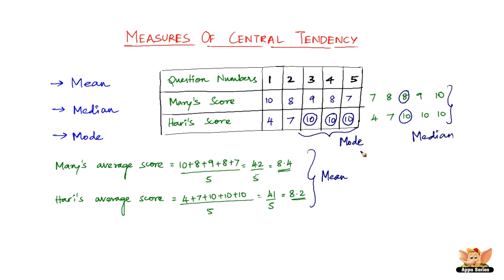Briefing you once more or putting it in a nutshell, the average score that Mary found in the first case is the mean. The middle score that Hari was using for his argument is the median. The most often scored mark that Hari used in his second strategy is the mode. In the forthcoming videos, let us look at them in detail, and let us start off with mean.